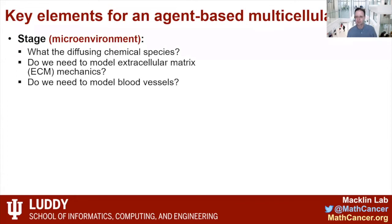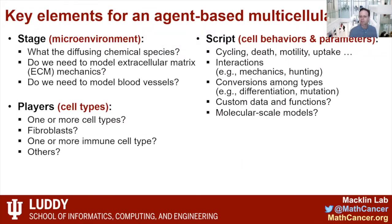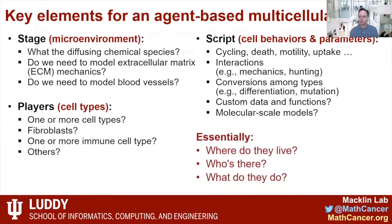The key elements for an agent-based multicellular model can be thought of like a play. First, you have the stage — the environment: what are the diffusing chemical species, do you need to model mechanics, do you need blood vessels? Then you need the players — one or more cell types: maybe cancer cells, subclones, host and stromal cells like fibroblasts or immune cells. And then those cells need a script — their behaviors and parameters for cycling, interaction, and so on. It really boils down to: where do they live, who's there, and what do they do? If you can answer these three questions, you can build an agent-based model.